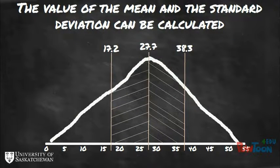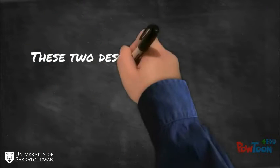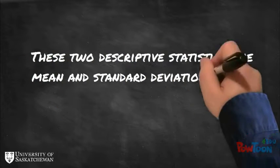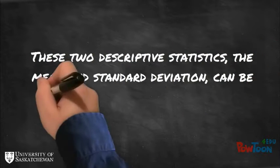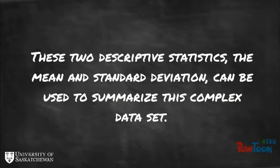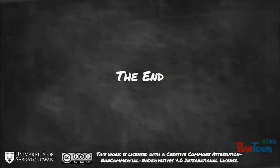The value of the standard deviation is reported as a plus-minus value. The standard deviation for this data set is plus or minus 10.6 cm. These two descriptive statistics, the mean and standard deviation, can be used to summarize this complex data set.